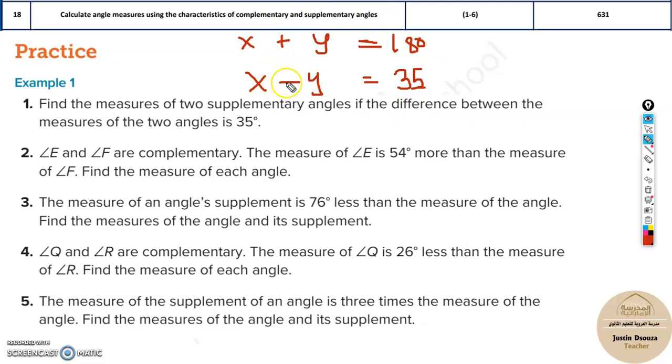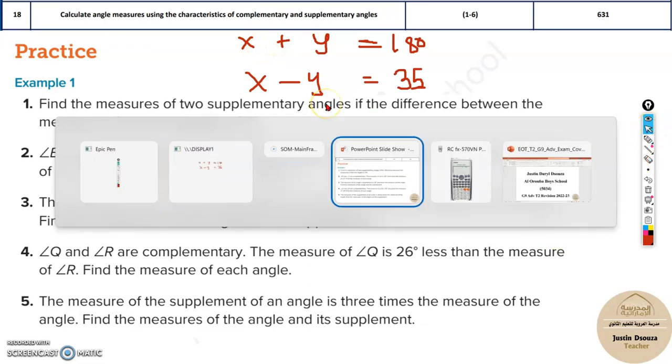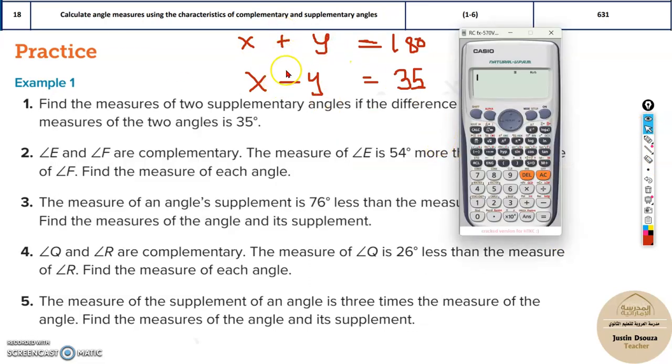Now there are many methods to solve. One of the methods is take the Y to the other side, substitute instead of X 35 plus Y, and solve it algebraically. But over here I'll tell you the easiest method. These are two simultaneous equations. We have solved these equations before. So all you need to do is press mode, go to 5 and 1. Now before X it's 1, before Y it's 1, and lastly we have got 180. Same thing over here, 1, minus 1, and 35.